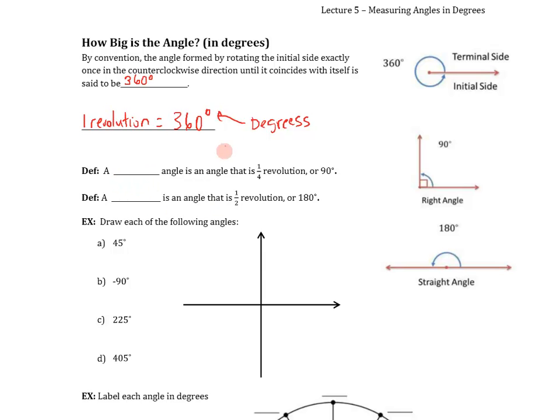We have some other angles that we are familiar with. We often talk about a right angle. That is one fourth of the complete rotation, so that would be a 90 degree angle. We can also talk about a straight angle. That is an angle that is one half of a complete revolution, which is 180 degrees.